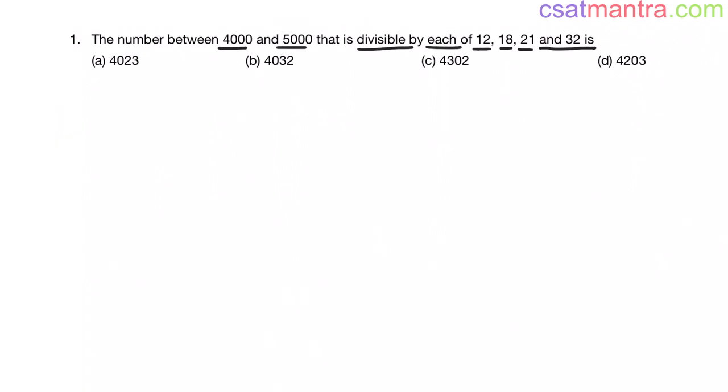Here 4203 is an odd number. 4023 is an odd number. But our number should be divisible by 12, 18, 32. That means they are even numbers my friends. So our answer should be even number. So I am eliminating A and D because they are odd numbers.